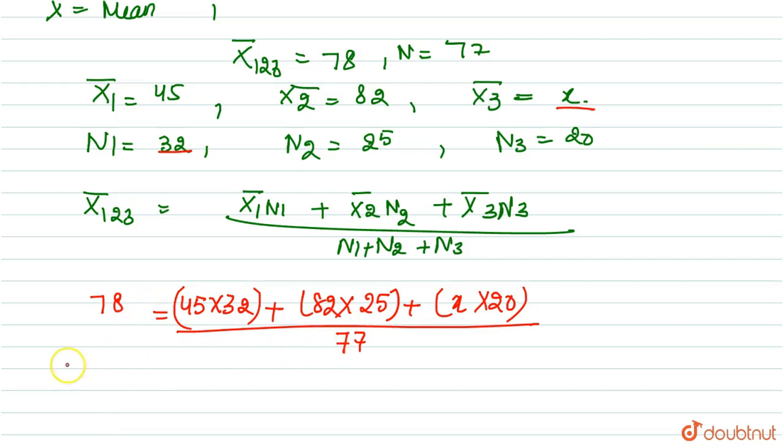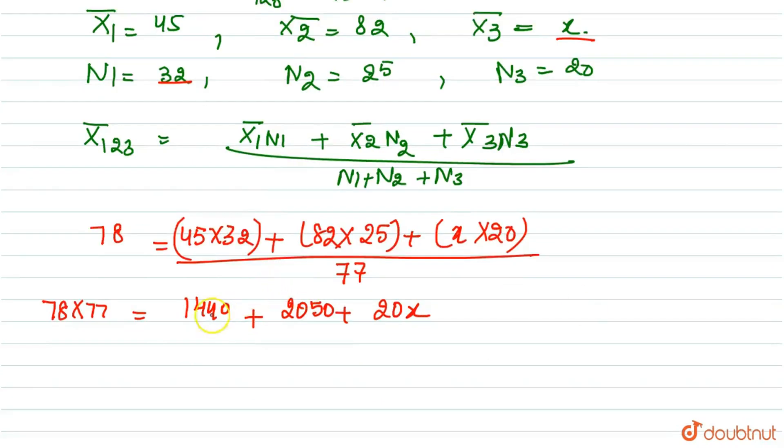If we cross multiply, 78 into 77 equals 45 into 32 which is 1440 plus 82 into 25 which is 2050 plus x into 20 which is 20x. 78 into 77 equals 6006. 1440 plus 2050 equals 3490.